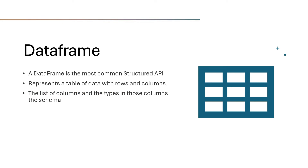Another thing that is very fundamental to Spark — the basic building block — is a DataFrame. A DataFrame is the most common structured API that Spark provides. Think of a DataFrame simplistically as a table which has rows and columns. The list of columns and their types is the schema. A DataFrame can be thought of as the basic building block of Spark and can be visualized as a table with rows and columns.